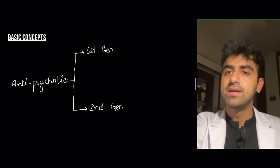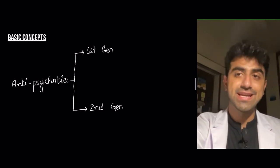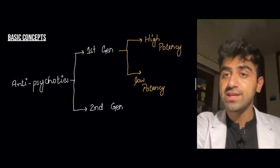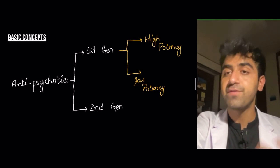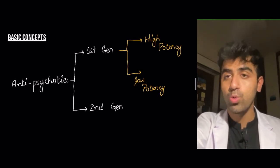Antipsychotics are divided into first generation and second generation. First generation is further divided into high potency and low potency.